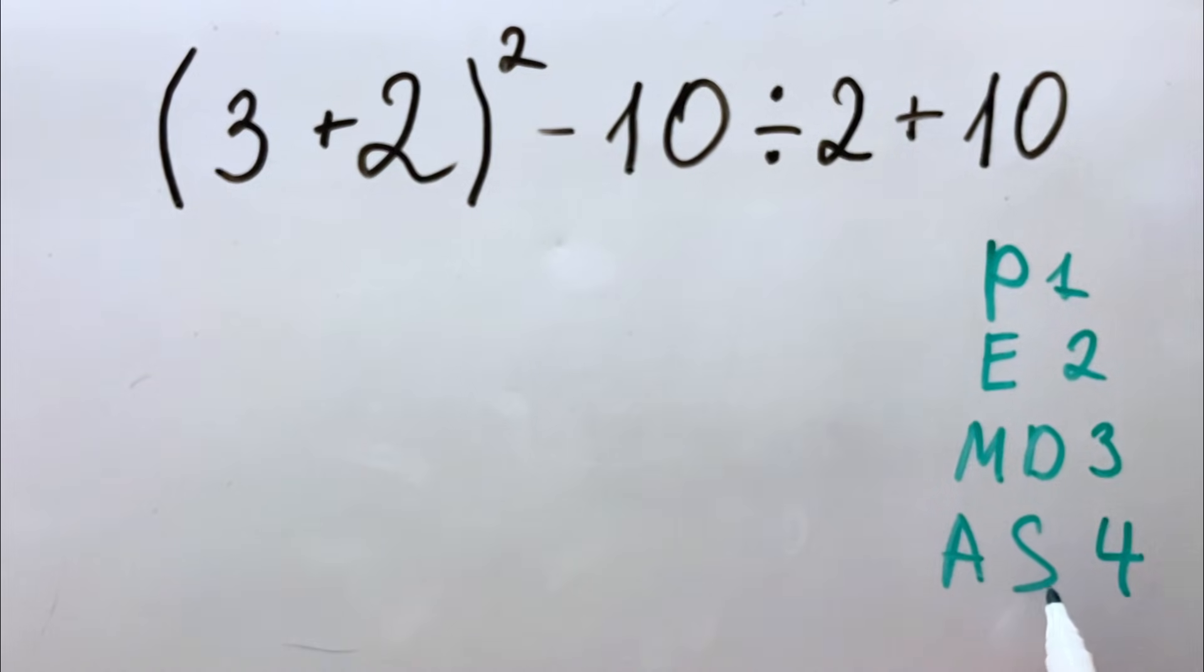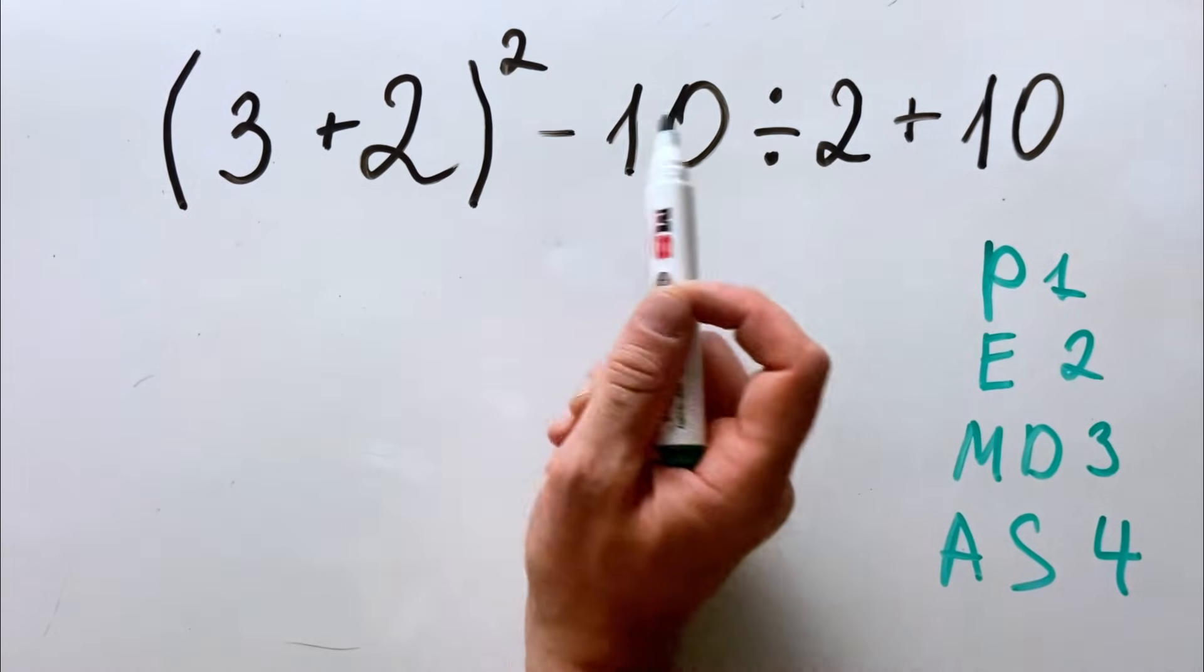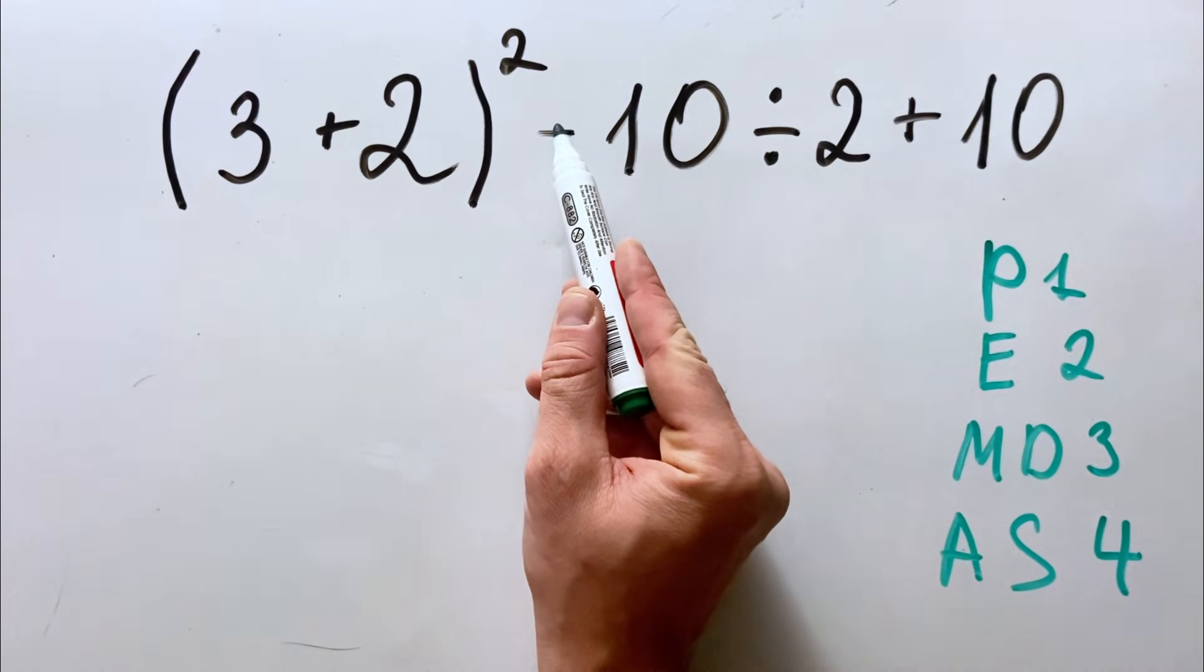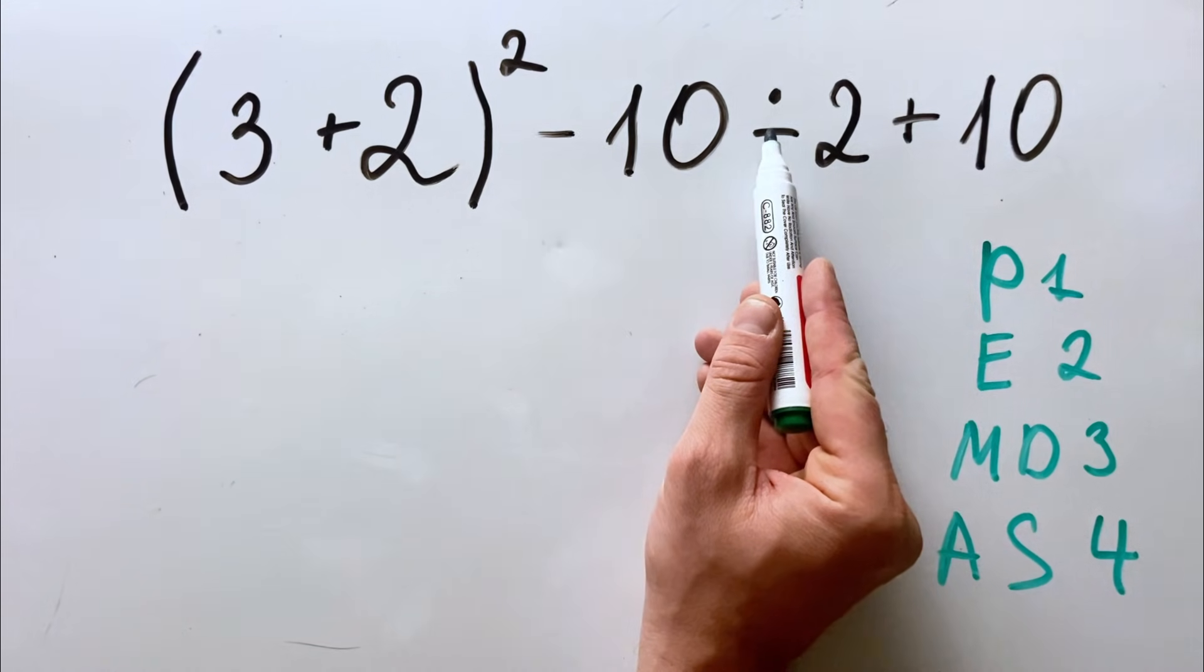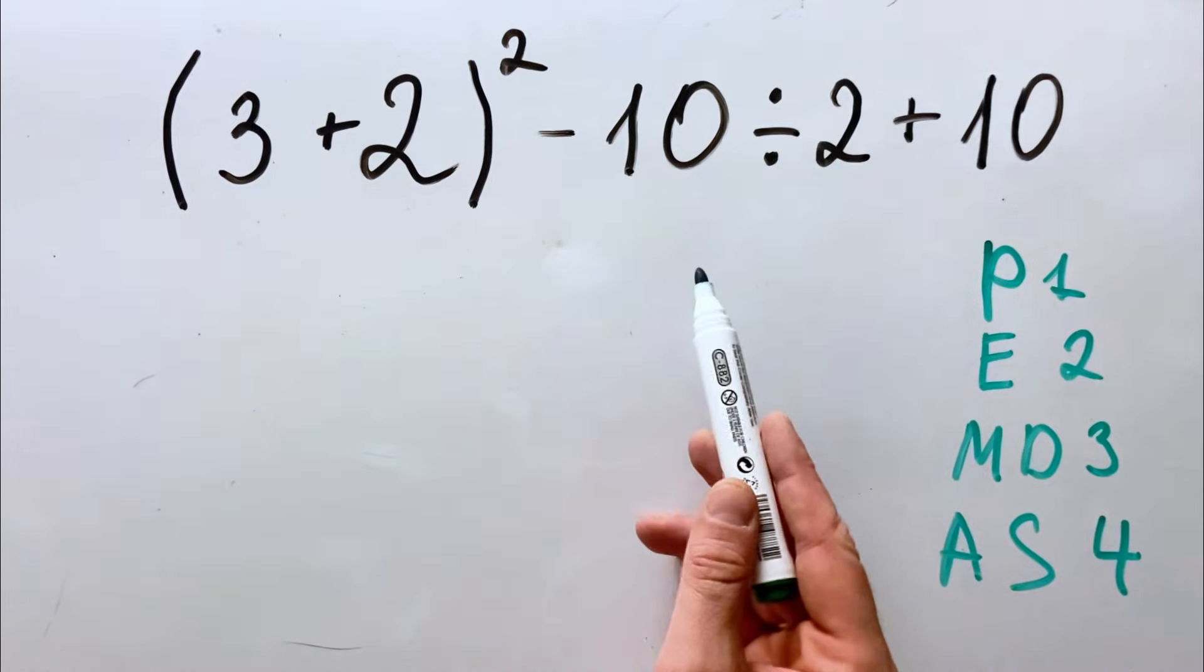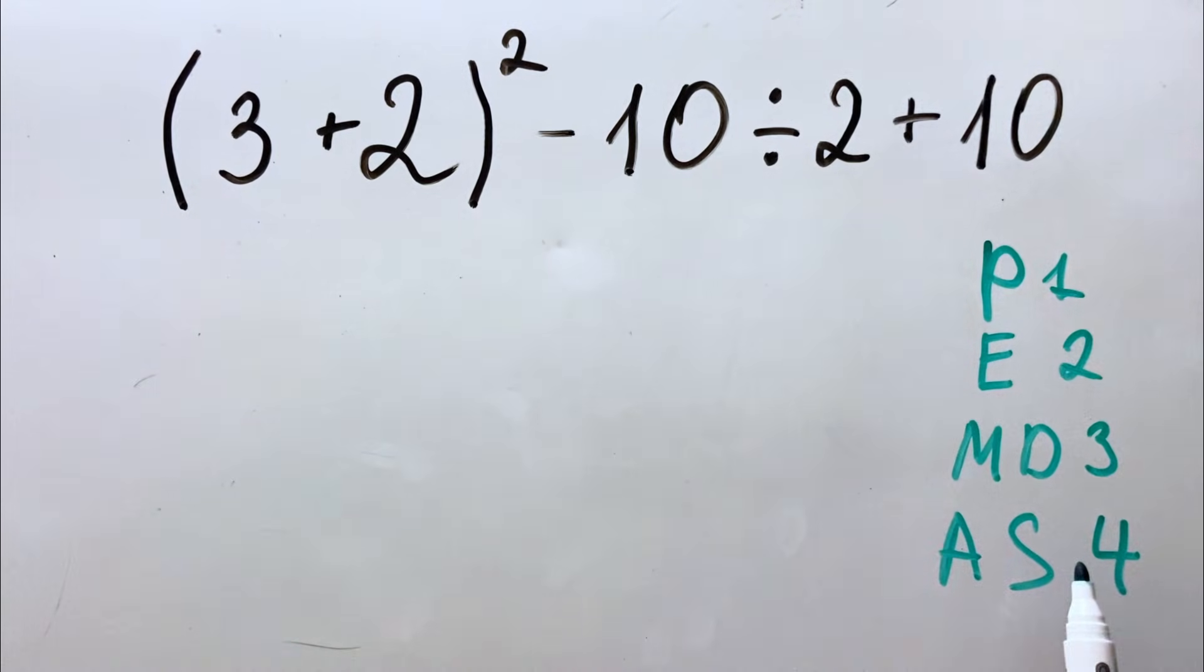And at last is addition and subtraction. We have subtraction, we have addition. So we should not do subtraction before the division, for example, because division has higher priority over addition and subtraction.